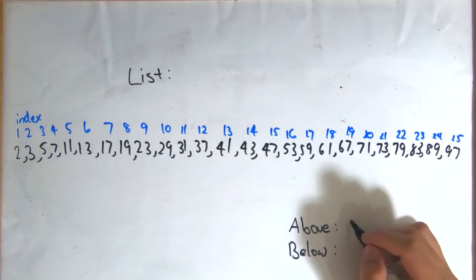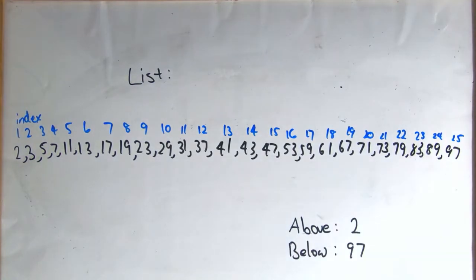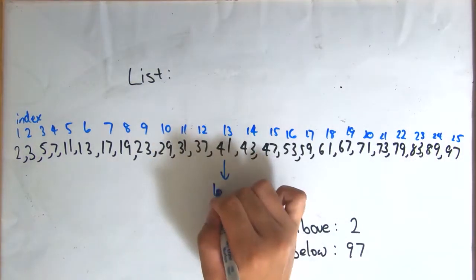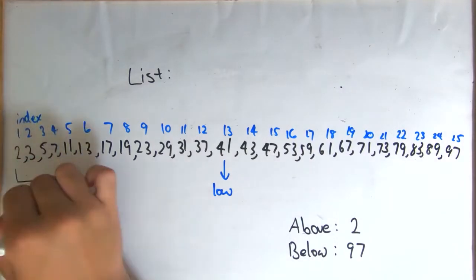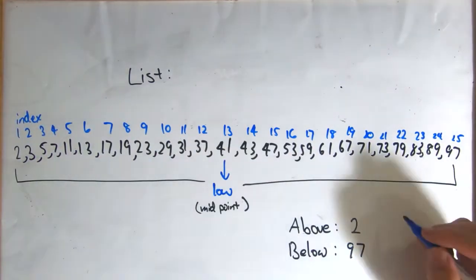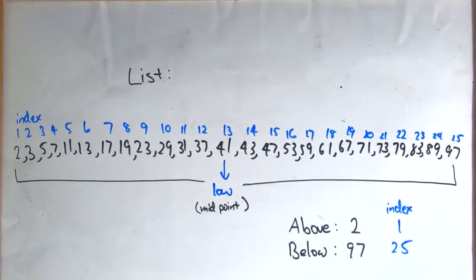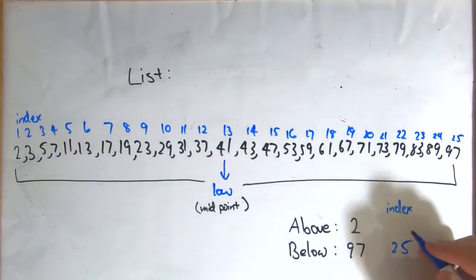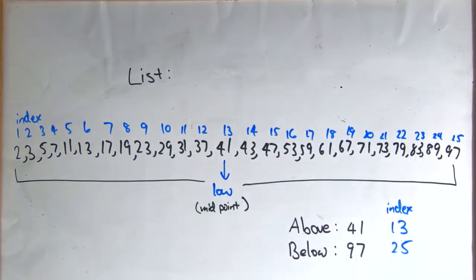We will try to find the number 73 again. In this list of 25 numbers, we will first look at the middle number, the 13th number to be exact, which turns out to be 41. Now the number we want to look for, 73, is greater than 41.